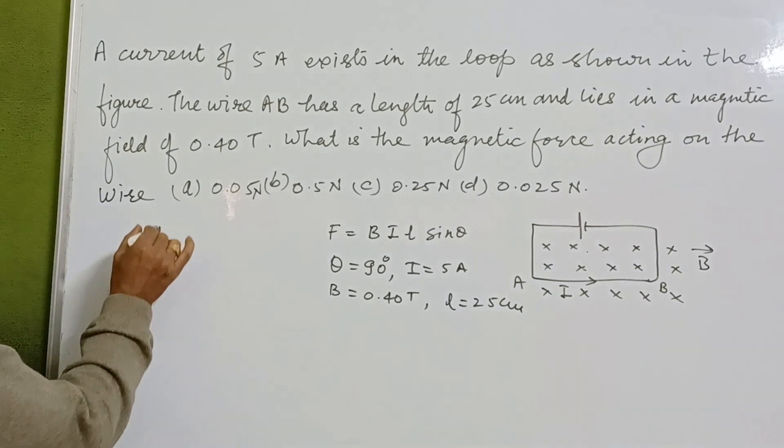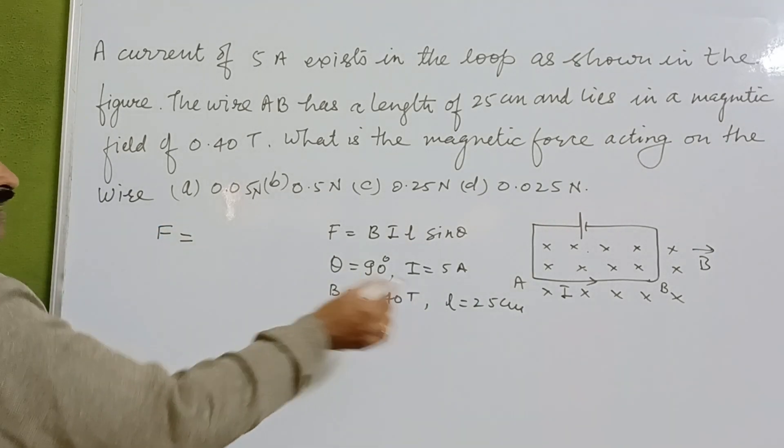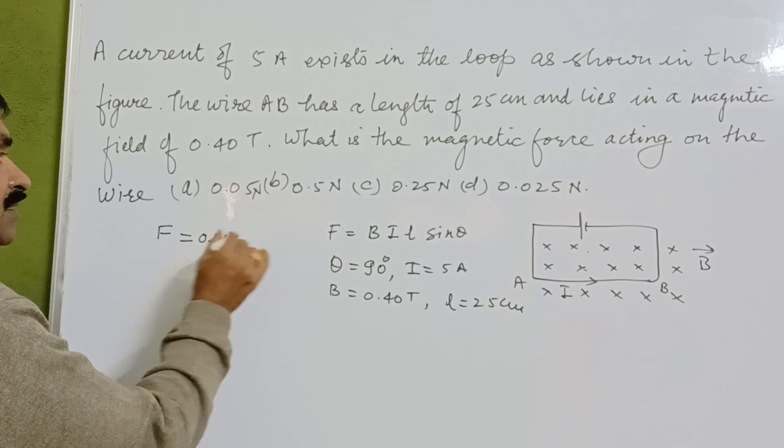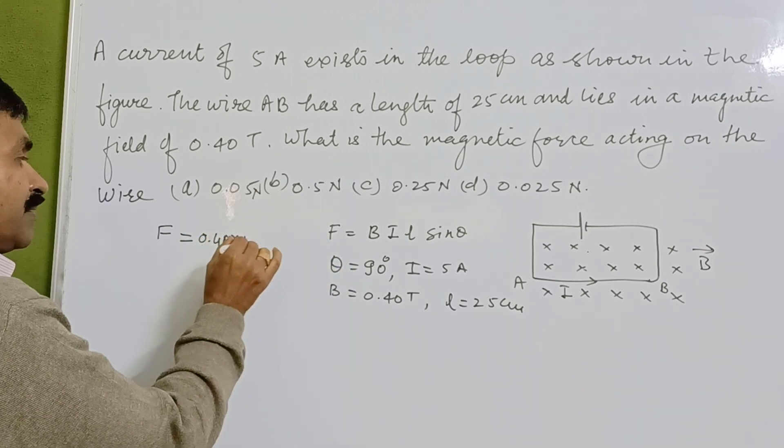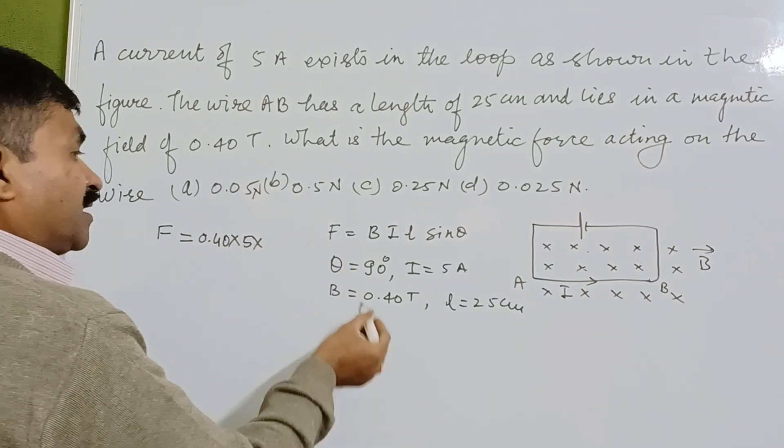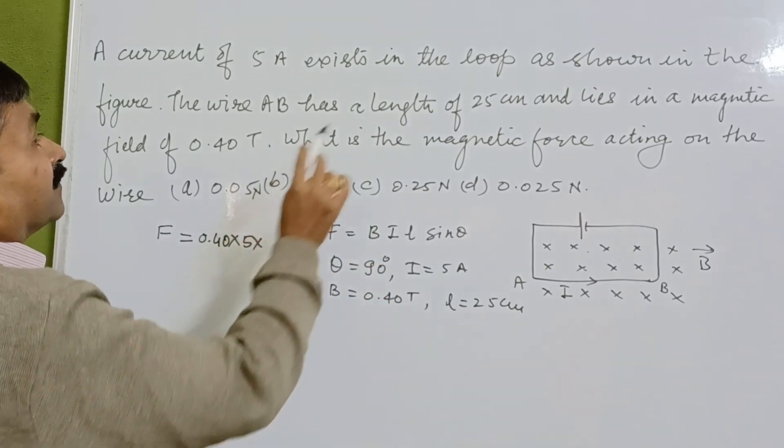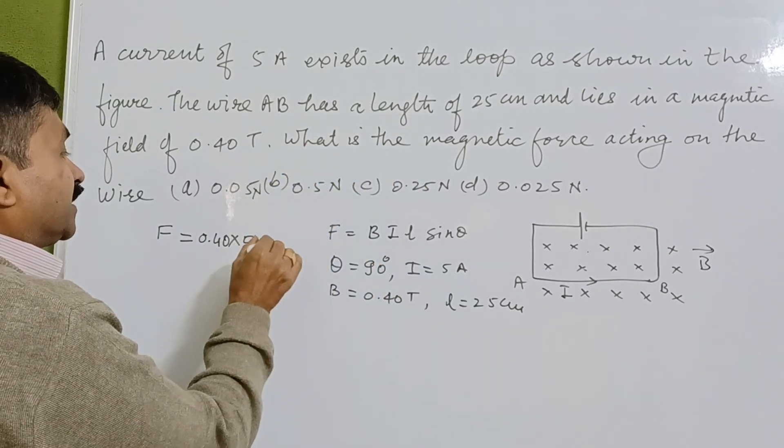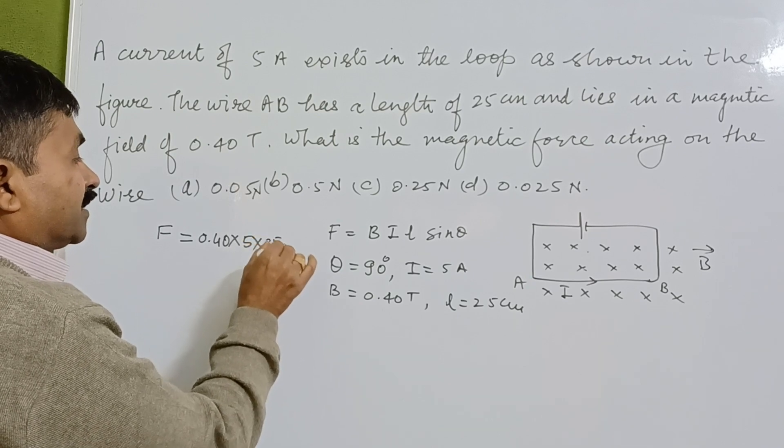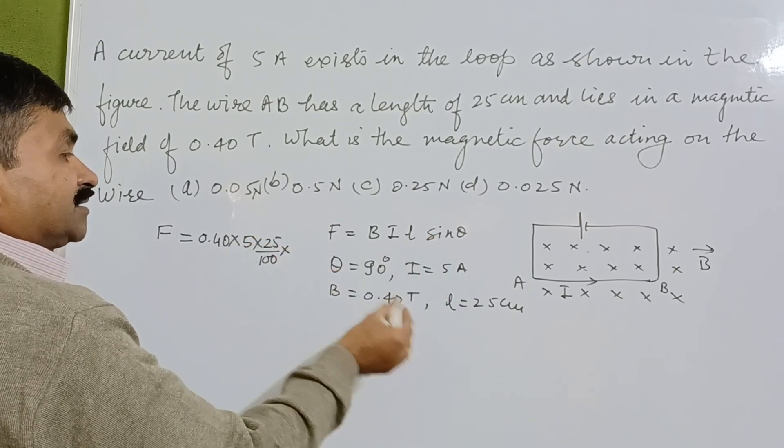The magnetic field is 0.40 tesla, current is 5 amperes, and the length is 25 centimeters. The angle is